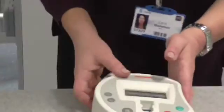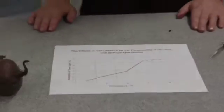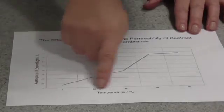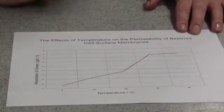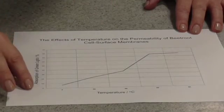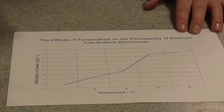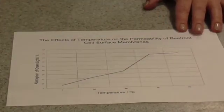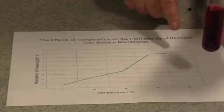When we've done this, we can use our data to plot a graph to see the effects of temperature on the leakage of anthocyanin from beetroot cells. On the X-axis we have our independent variable, which is temperature — our range of temperatures. On the Y-axis we have our dependent variable, which is the absorbance of green light as a percentage. You can clearly see that the higher the temperature, the more red pigment leaked out and the more green light has been absorbed by the sample.